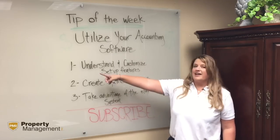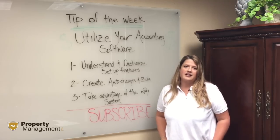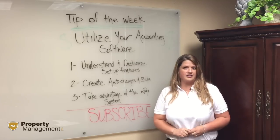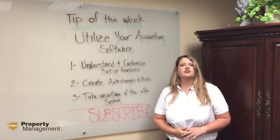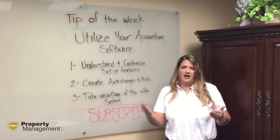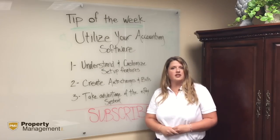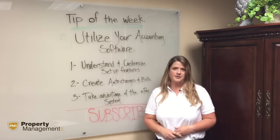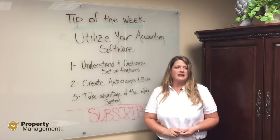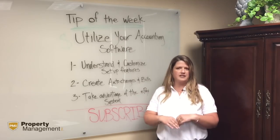First of all, you should go in and understand and customize all of your setups and features in your accounting software. These setups could include all of your streams of revenue. When you're setting up your revenue streams, you want to make sure that you include every stream of revenue you can think of, so it's automatically calculating your commissions based off of your setups. These can include your management fee based on percentage of rent, any sort of late fees you'll collect from the tenant, convenience fees, application fees — the list goes on.